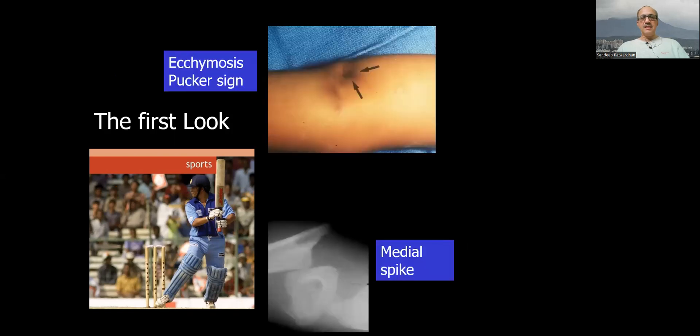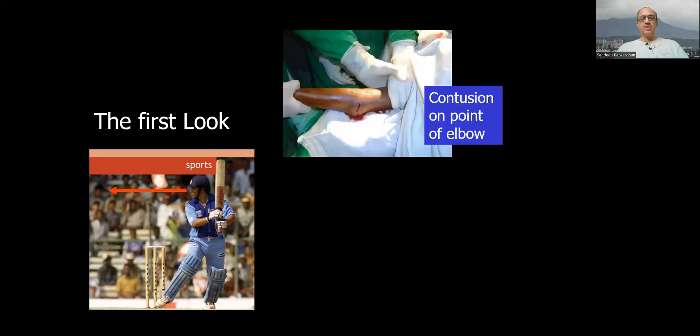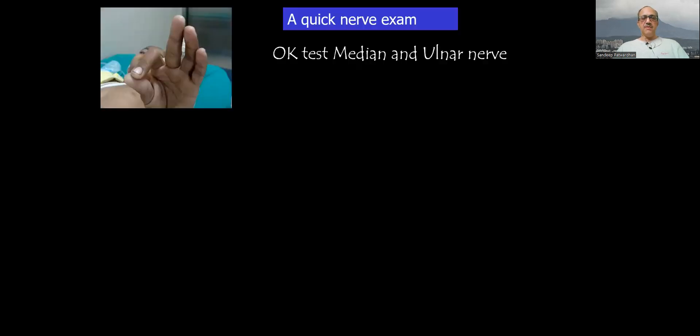Always look for the skin signs such as ecchymosis or the pucker sign or the medial spike which suggests a difficult reduction and possibility of a nerve or vessel entrapment. If there is contusion on the tip of the olecranon, this could be a flexion type of injury and you should be aware of that.